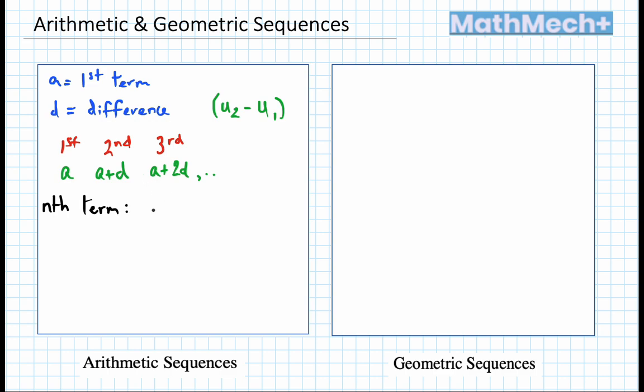There's a formula for this. A plus n minus 1 times d.